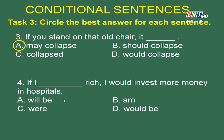Sentence 4: If I (___) rich, I would invest more money in hospitals. Bạn nào cho cô biết đây là câu điều kiện loại mấy? Điều kiện loại 2 — bởi vì mệnh đề chính đang dùng động từ khiếm khuyết would và động từ invest. Vậy mệnh đề if sẽ sử dụng thì quá khứ giả định. Đáp án C là lựa chọn đúng. Cô chúc mừng bạn nào có đáp án giống cô.